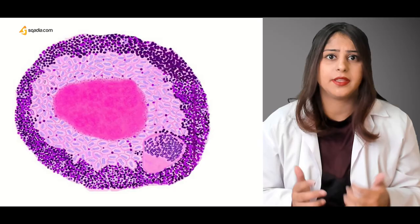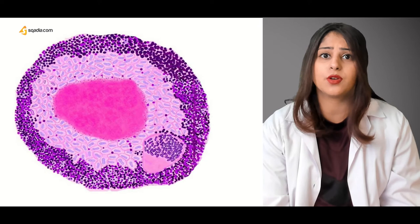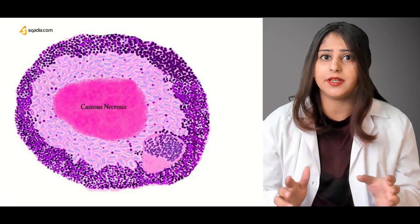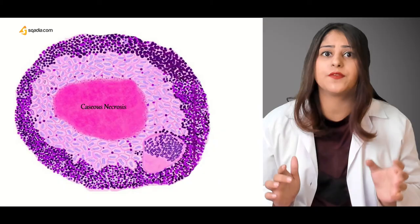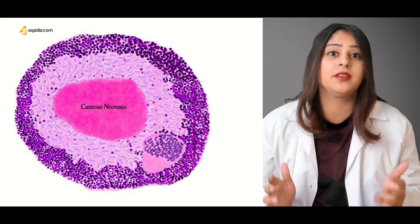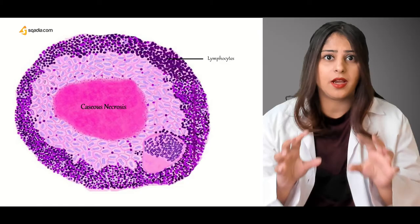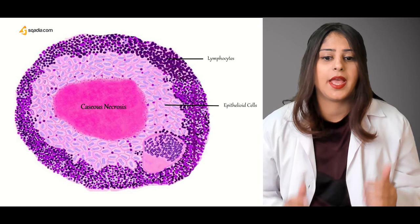Now let's see the structure of a granuloma. This is a histological slide of a granuloma. You can see that in the center, this pinkish material is caseous necrosis — caseous means cheese-like. This central cheesy material is due to the excessive waxy lipids present in the cell wall of Mycobacterium tuberculosis. It is surrounded by a rim of purplish lymphocytes. Epithelioid cells are modified macrophages and are the hallmark of granulomas.